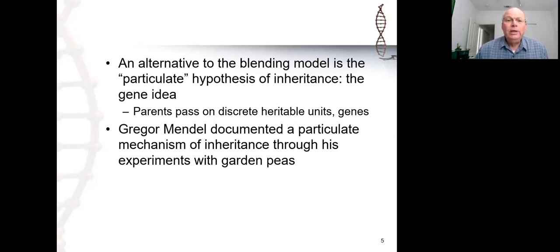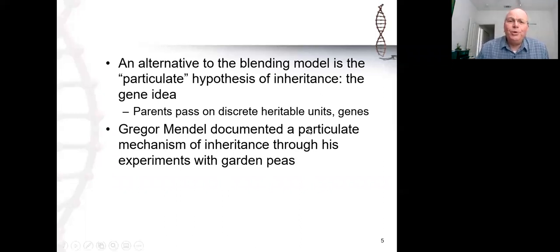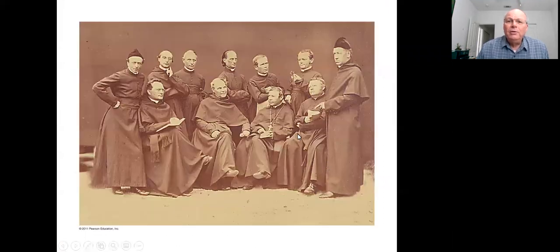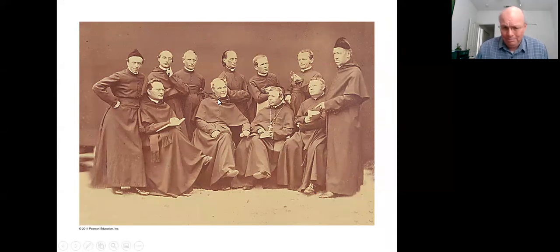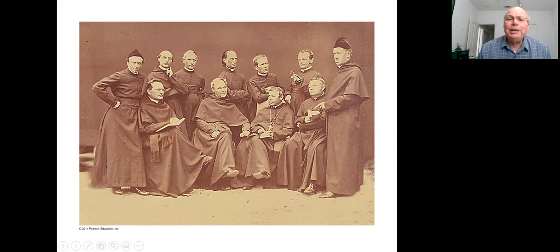We can now explain what the snapdragon model is all about, and we'll come back to it later in the chapter. Mendel chose to work with garden peas. Before we go on, let me show you a picture of Mendel — a very famous photo of the monks of his day in the monastery. This is the abbot that sponsored Mendel's work and built the greenhouse for him. Mendel is the only person in the picture holding a plant — a fuchsia plant, which is the state flower of Moravia in the Czech Republic.